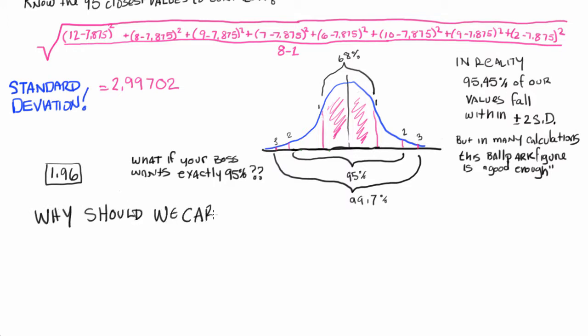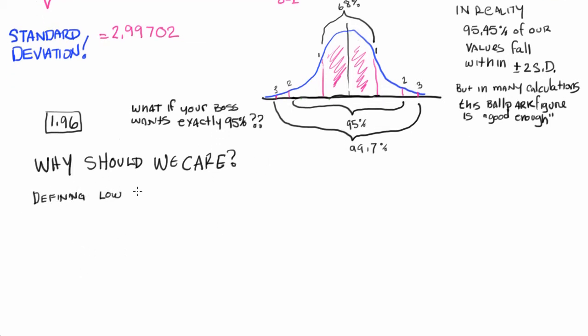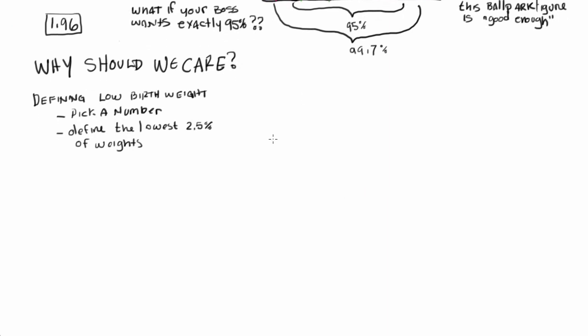Now, why should we care? Well, I'll give you an example from one of the studies we just read recently, and that is defining low birth weight. Now, you can do it one of two ways. One, you can pick a number, or two, you can define the lowest 2.5% of weights.